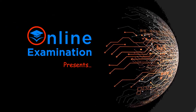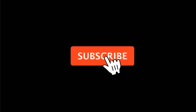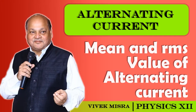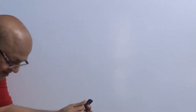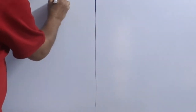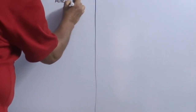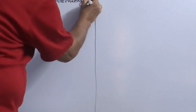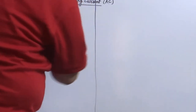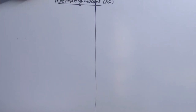Welcome to Alternating Current — AC. The chapter name is AC. It is also a very important chapter, especially the numericals given in NCERT are very important in this chapter to do.